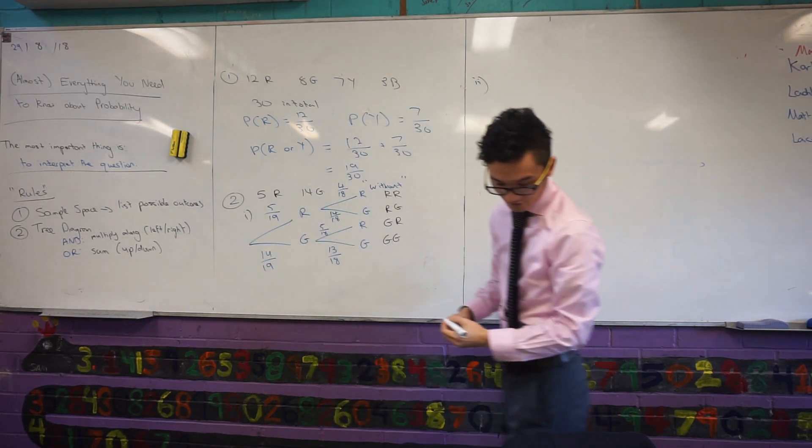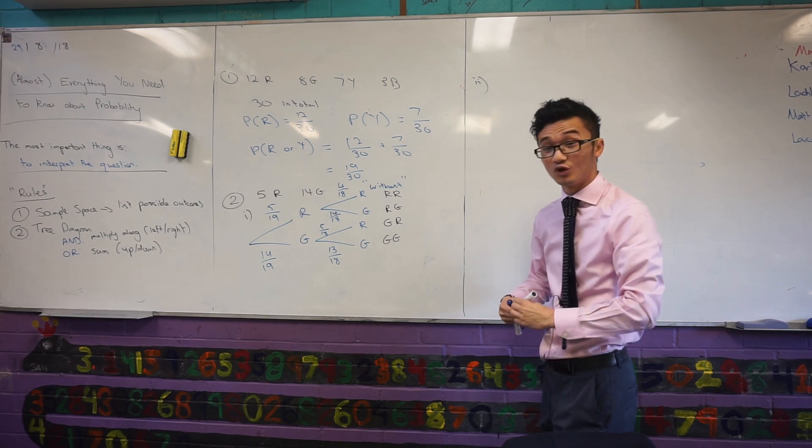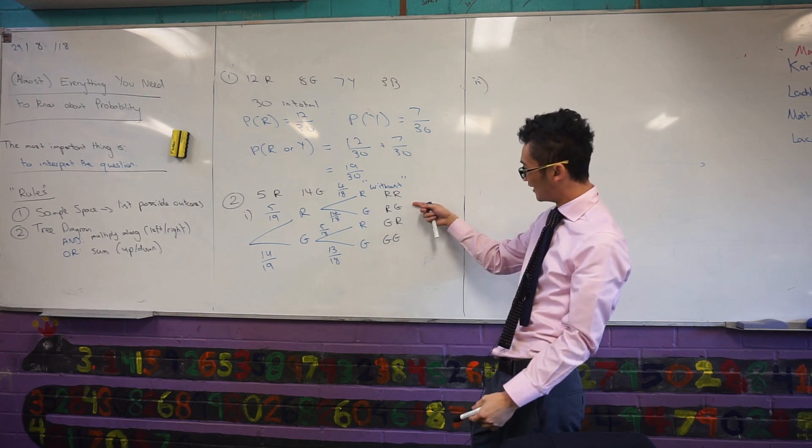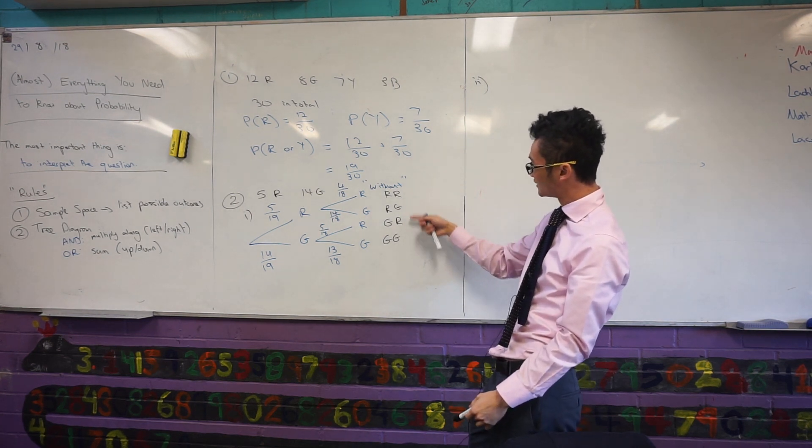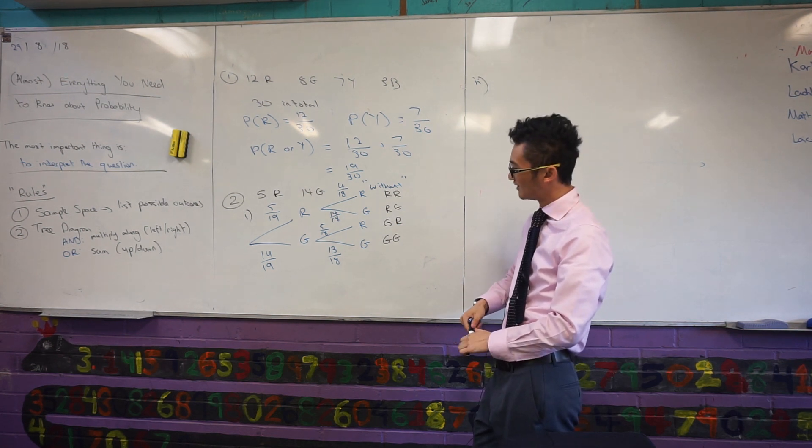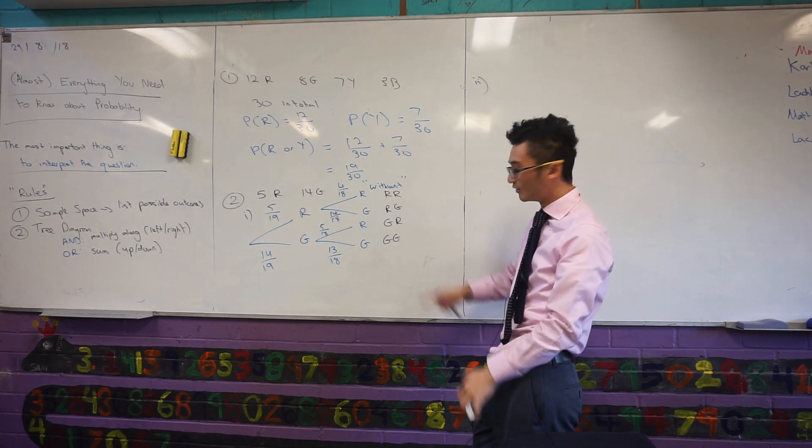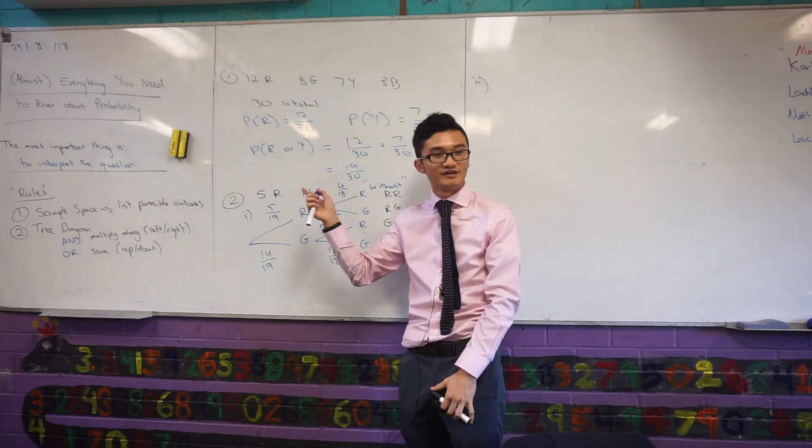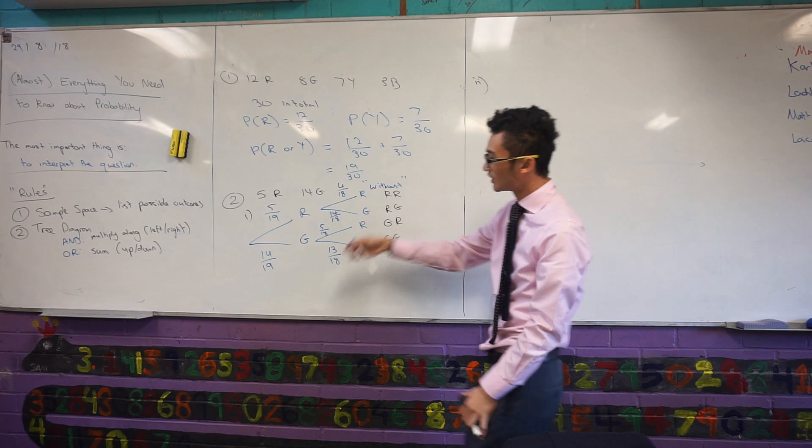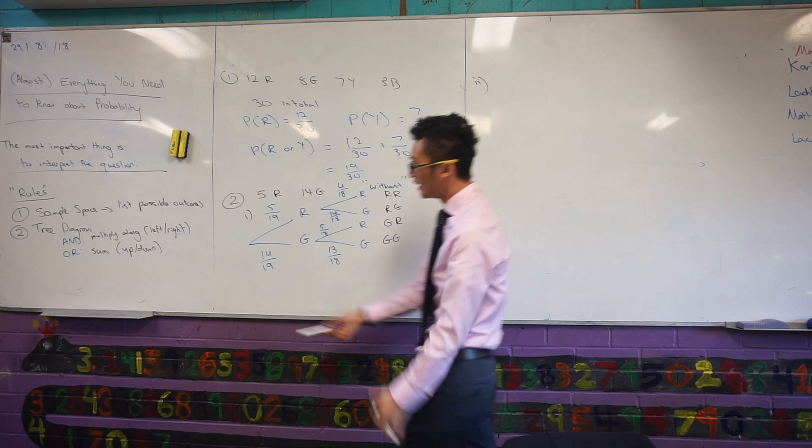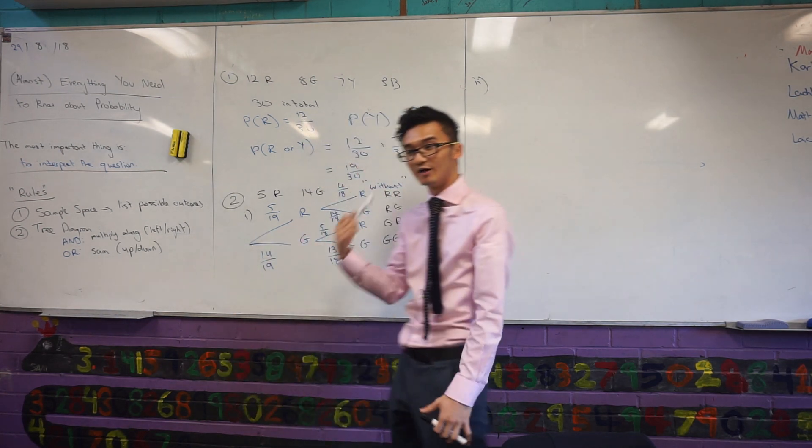So, that's part 1. Part 2 says, find the probability that the 2 lollies are of different colours. One little trap that you might think of is, okay, 2 colours here. Oh, yeah, R, G, G, R. There's 2 of them. 2 out of 4, so it should be half. Why is that wrong? All I'm looking at is just the outcomes here. But, these aren't equally likely, are they? No. So, what you need to do is, come back to this rule. When you're looking at the tree diagram, when you see AND, you're going along. When you see OR, you're summing up and down.